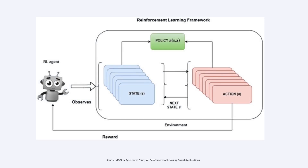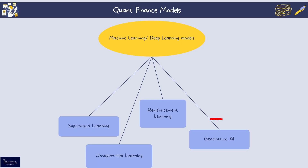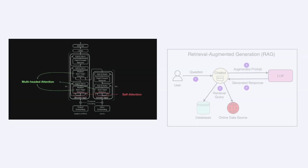Reinforcement learning involves an agent learning to make decisions by interacting with an environment to maximize cumulative rewards, and is applied in developing trading algorithms that adapt to market dynamics. Generative AI refers to models that can generate new data samples — like text or images — resembling training data. In finance, it can be used for automating report generation, scenario analysis, and creating synthetic data for modeling.